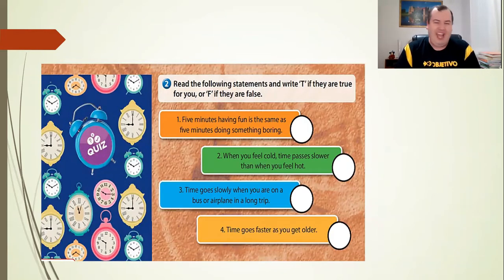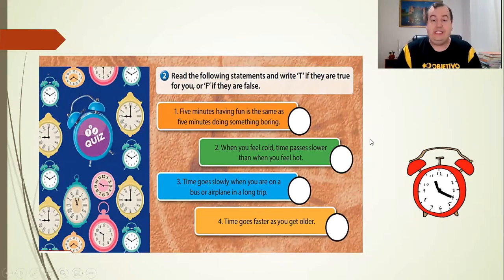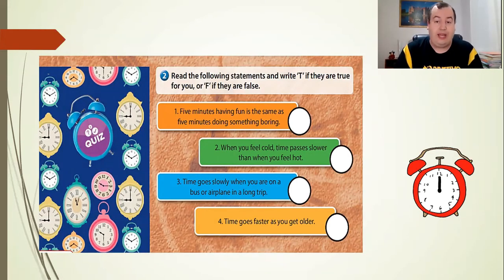Dá uma olhadinha. On exercise number two. Ainda aí, on page 38. Continuamos na página número 38. So, here, let's read the following statements and write true if, in your opinion, it's true or false if, in your opinion, it's false, okay? So, it's according to you, to your perception of time, okay? Então, aqui é de acordo com você. A sua percepção do que passa rápido, do que passa devagar. Vamos ler.